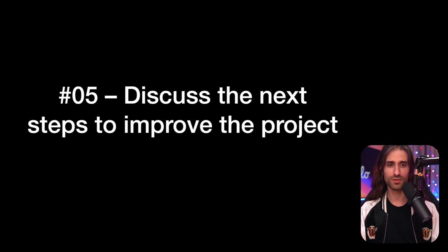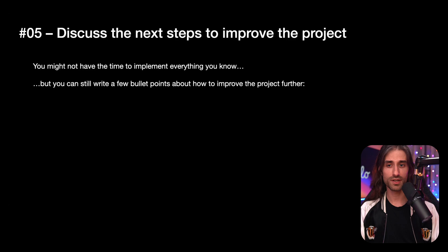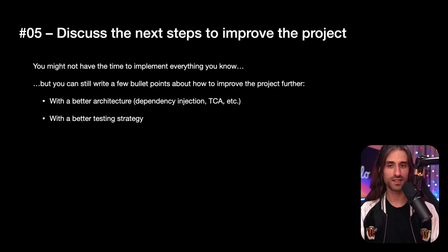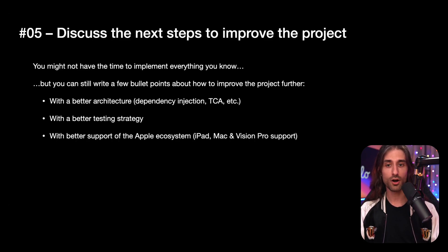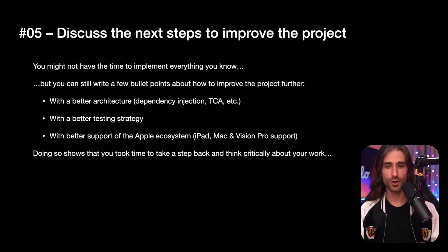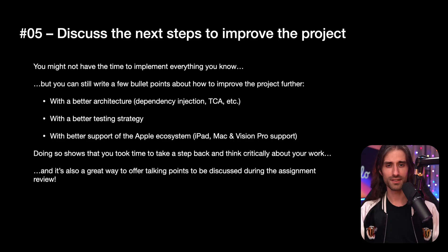Finally, tip number five is to take the time to discuss the next steps to improve your project. You might not have the time to implement everything that you know, and it's totally okay — but you can still write a few bullet points in your readme about how to improve the project further. This can include how you can improve the architecture, for instance by introducing dependency injection, or by following a popular pattern like TCA (the Composable Architecture), or with a better testing strategy, or with better support of the Apple ecosystem — supporting devices like the iPad, the Mac, or even the Vision Pro. The goal is to show that you took the time to step back and think critically about your work, and it's also a great way to offer talking points that can be discussed during the assignment review.